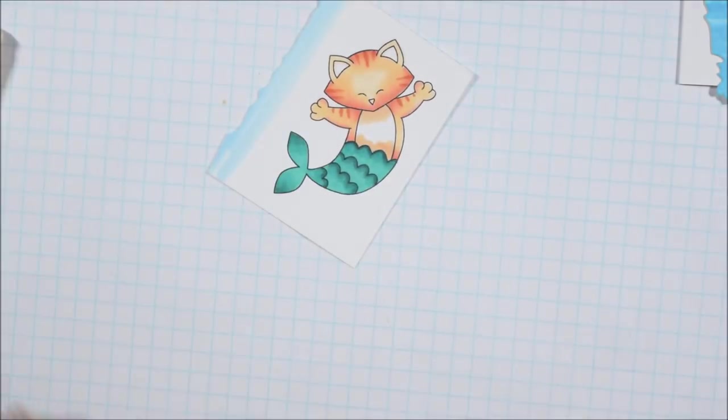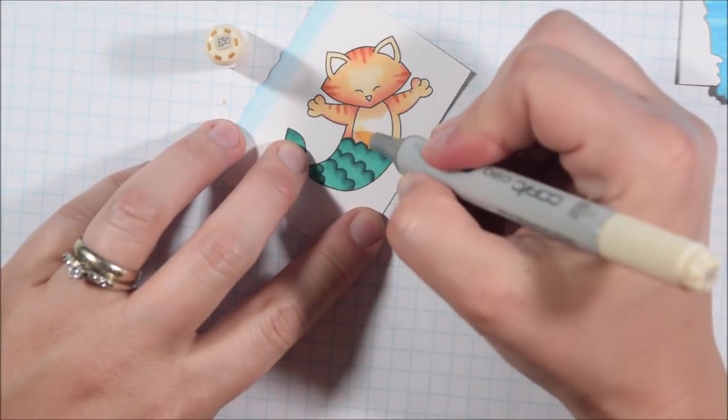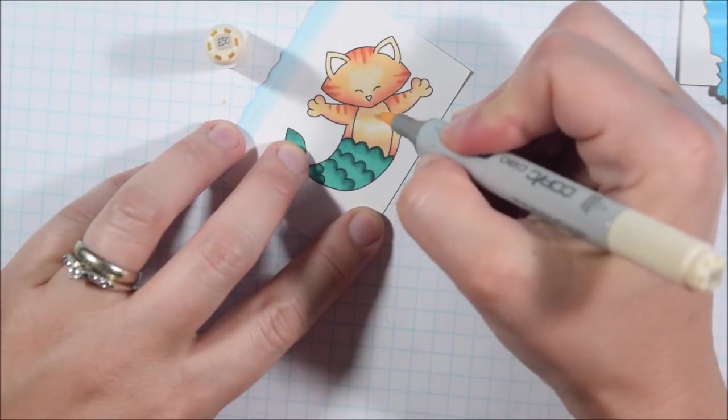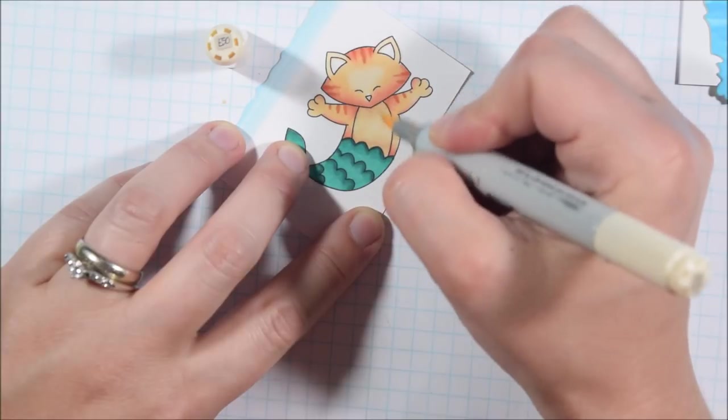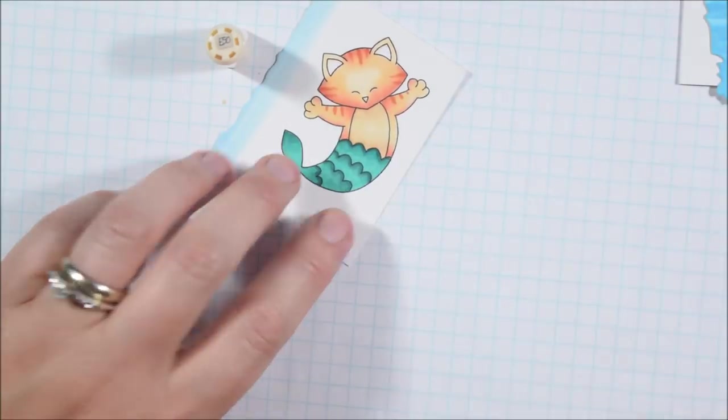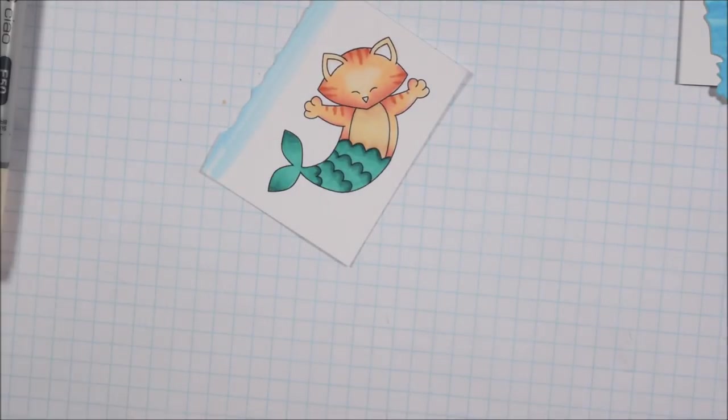I would consider making sure that the layers underneath have had at least a few seconds to dry. If the layers underneath are really wet it can be hard to achieve a finer line because it will just start blending with the marker that's already present on the paper.